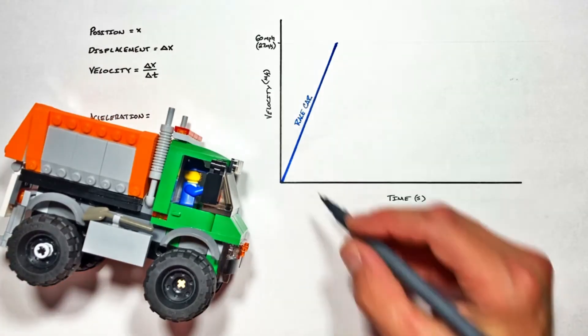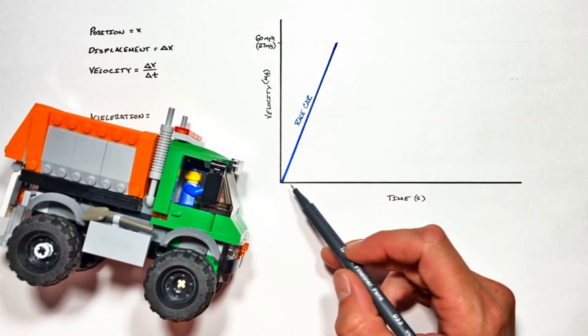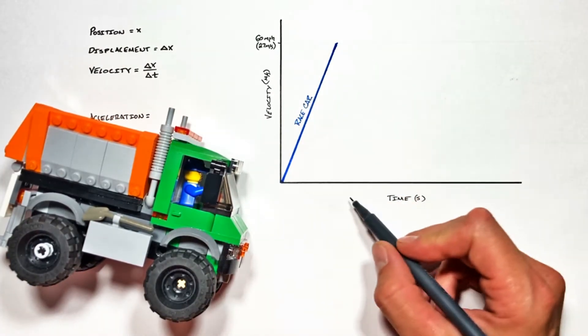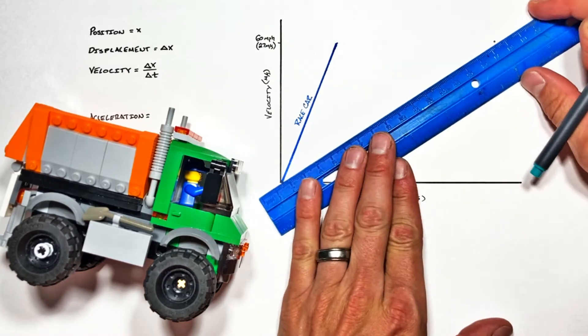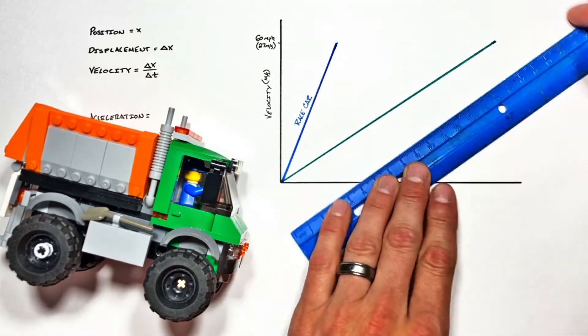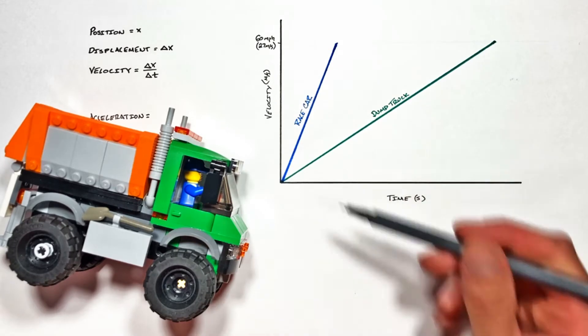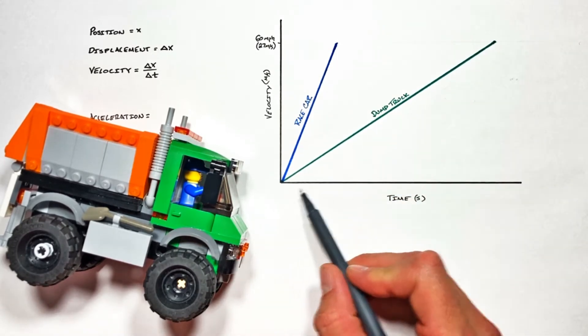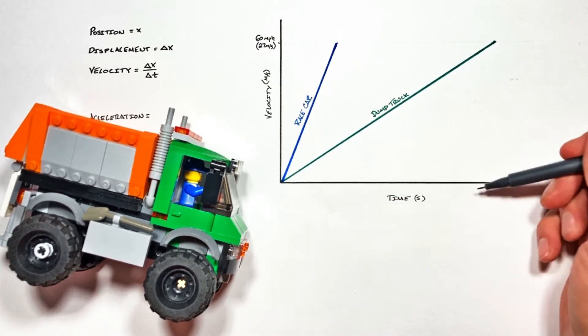Our dump truck, on the other hand, is going to go from zero up to sixty miles an hour; it's just going to take much more time. We see that on our graph because the dump truck takes more time—that's a horizontal shift—in order to make it up to sixty miles an hour.